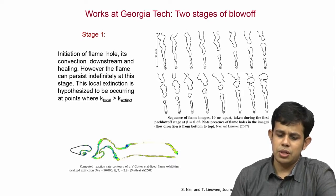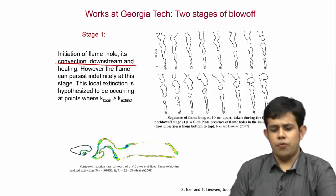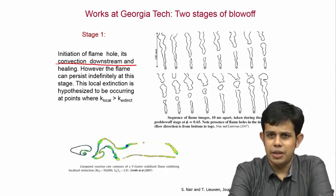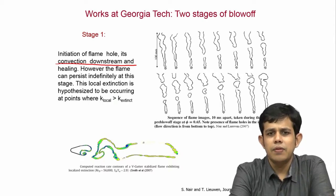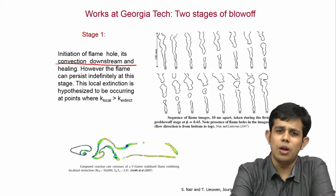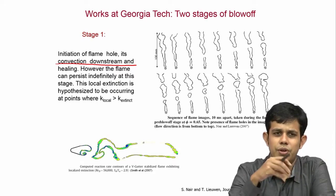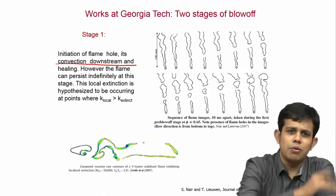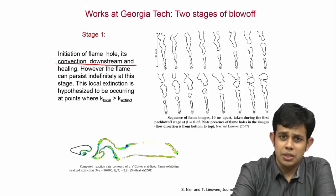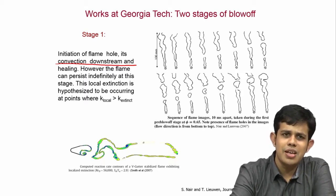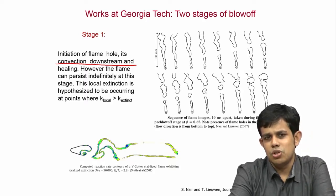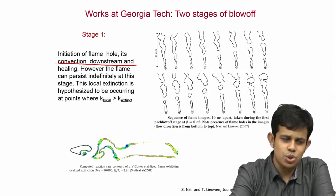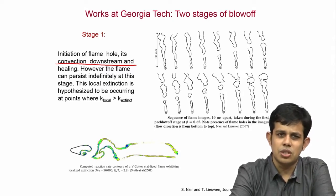They found that as blow-off is approached, there is an initiation of a flame hole which convects downstream, or it can heal in some cases — the flame hole can close. They also said that this flame hole, which is a region of unburnt reactant surrounded by the flame front, was created because the local stretch rates at those points exceeded the corresponding extinction strain rates.